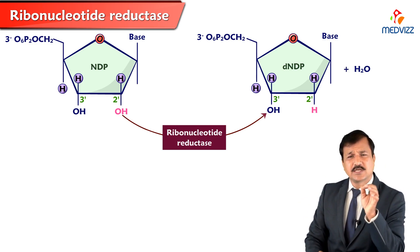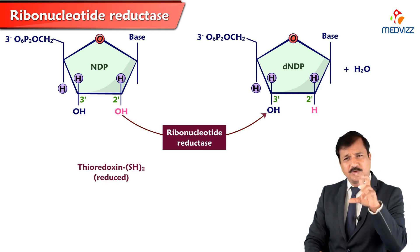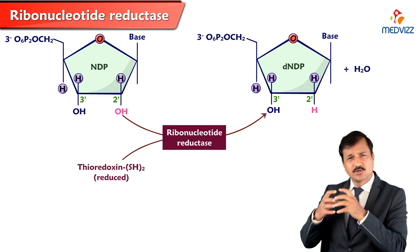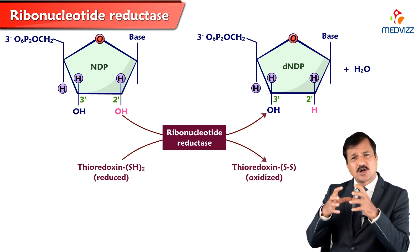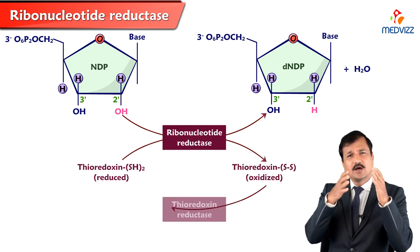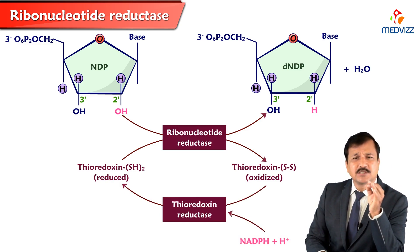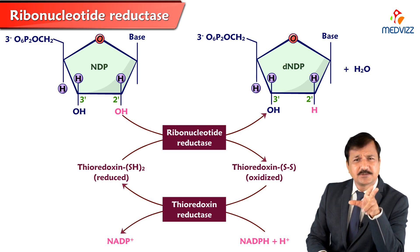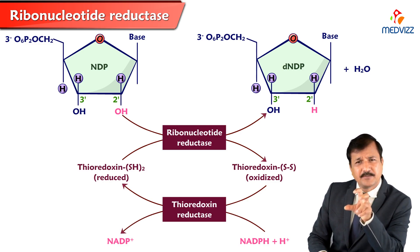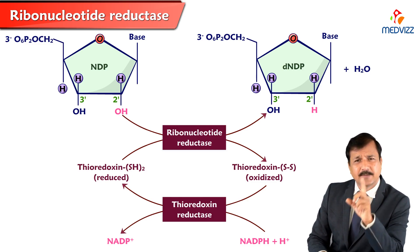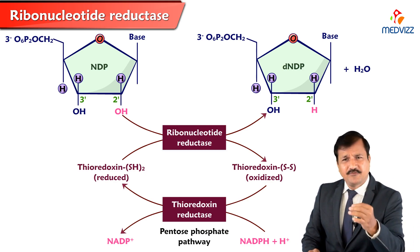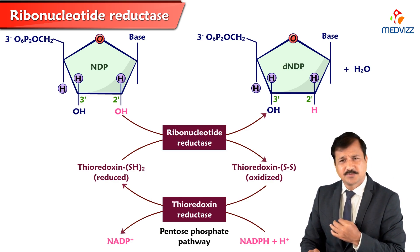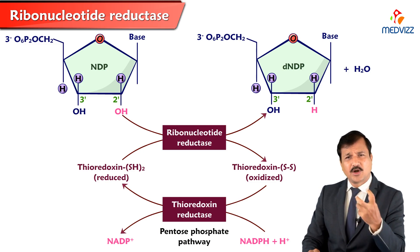A molecule called thioredoxin, which has a thiol group with SH, enters the reaction and donates two hydrogens. These two hydrogens combine with the oxygen atom to make water, and thioredoxin becomes oxidized. This oxidized thioredoxin is then reduced back to its reduced form using NADPH, catalyzed by thioredoxin reductase. The major source of NADPH is the pentose phosphate pathway.